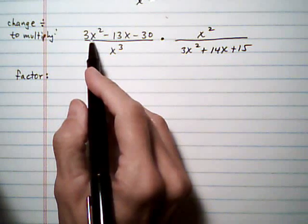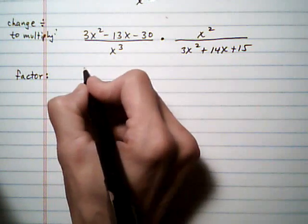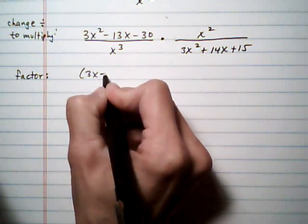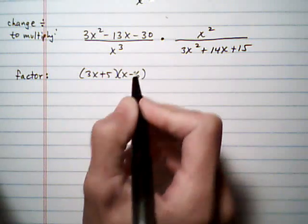So factoring the trinomial 3x squared minus 13x, take away 30, gives us 3x, plus 5x, take away 6. And if you're rusty on factoring trinomials,